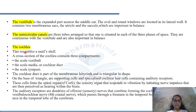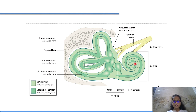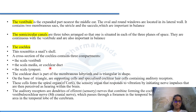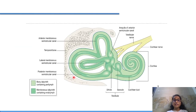Now cochlea — cochlea resembles a snail's shell. The cross-section of cochlea consists of three compartments: scala vestibuli, scala media or cochlear duct, and scala tympani. The cochlear duct is part of the membranous labyrinth and is triangular in shape.